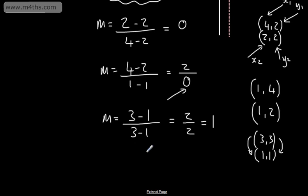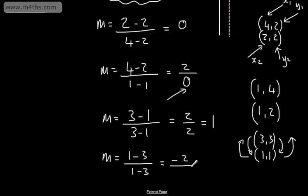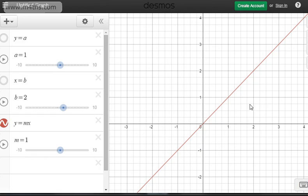What would happen if I'd gone the other way? If m equals 1 minus 3 over 1 minus 3, that gives negative 2 divided by negative 2. Dividing two negatives gives a positive answer, so it shows it doesn't matter which way round I do it, as long as I'm consistent. We can see this line has gone up 2 for every 2 it goes across — across 2, up 2, therefore that's a gradient of 1.